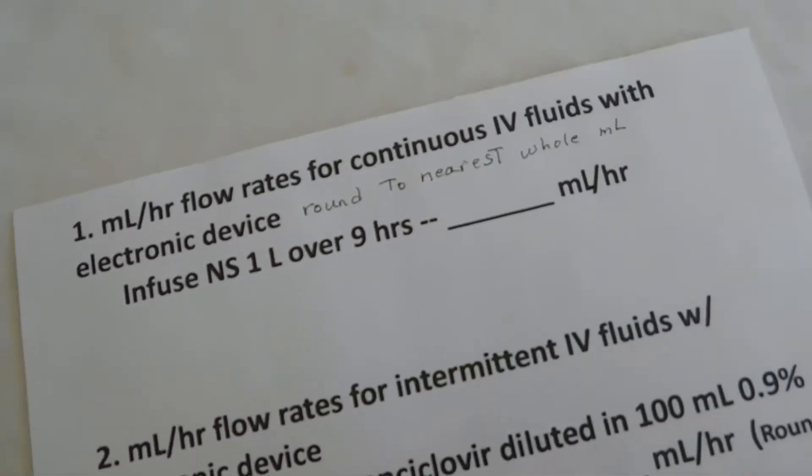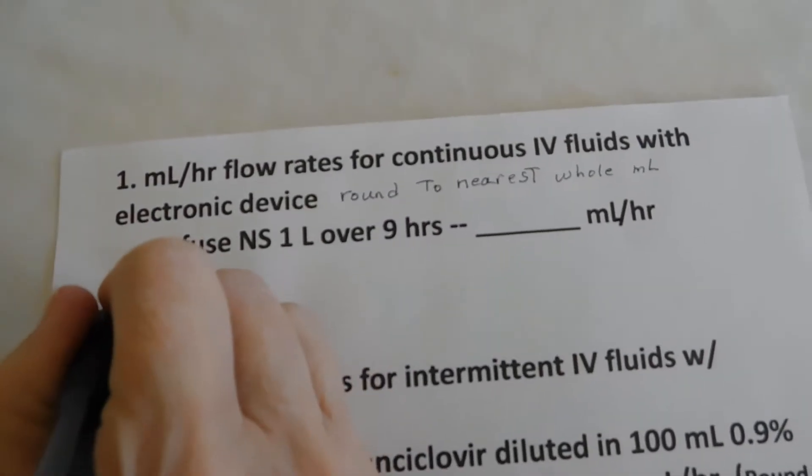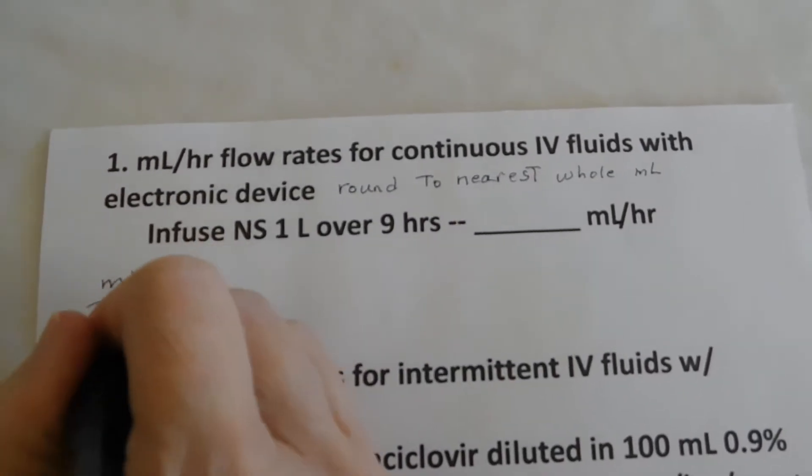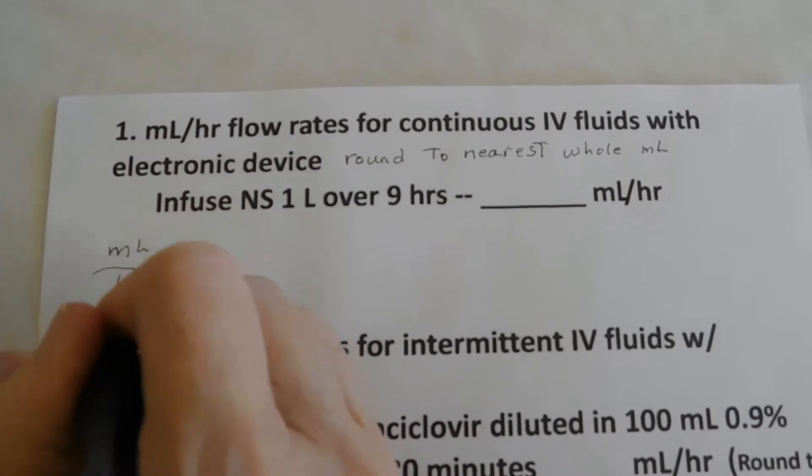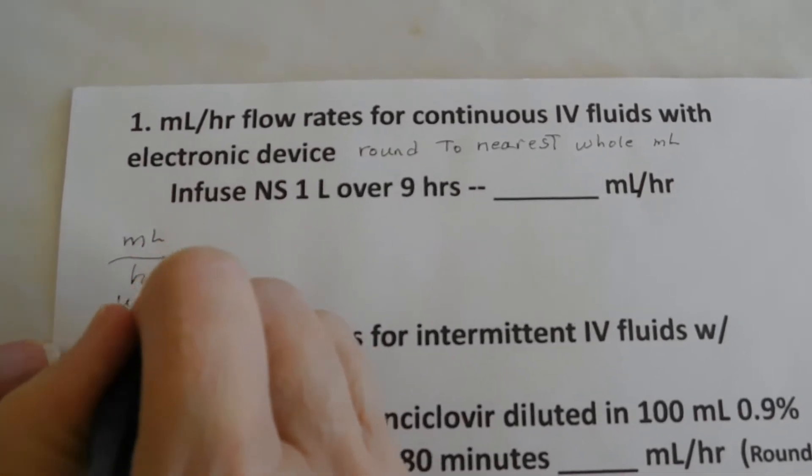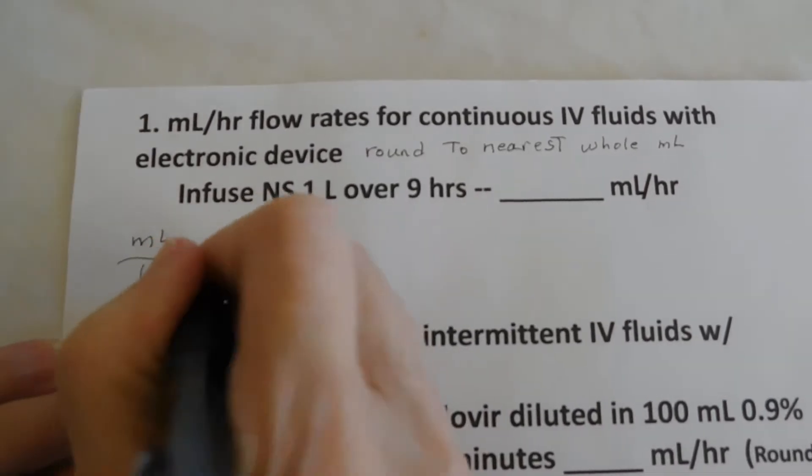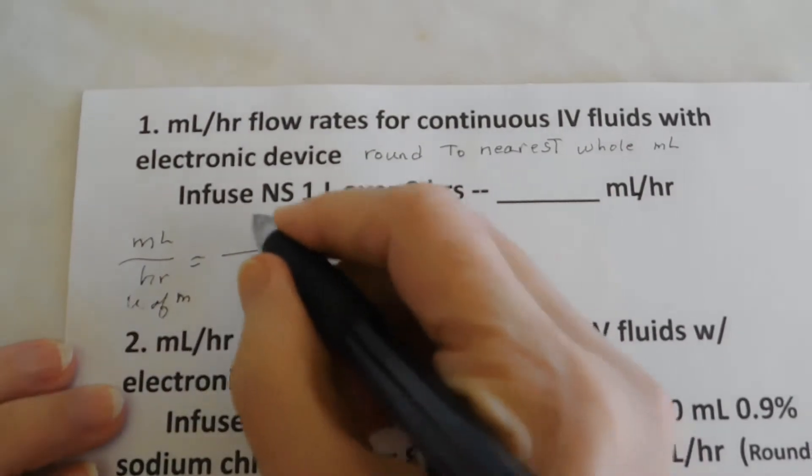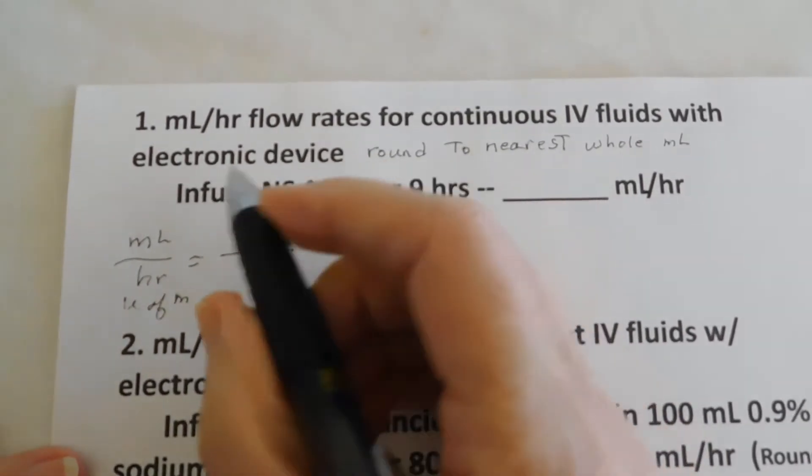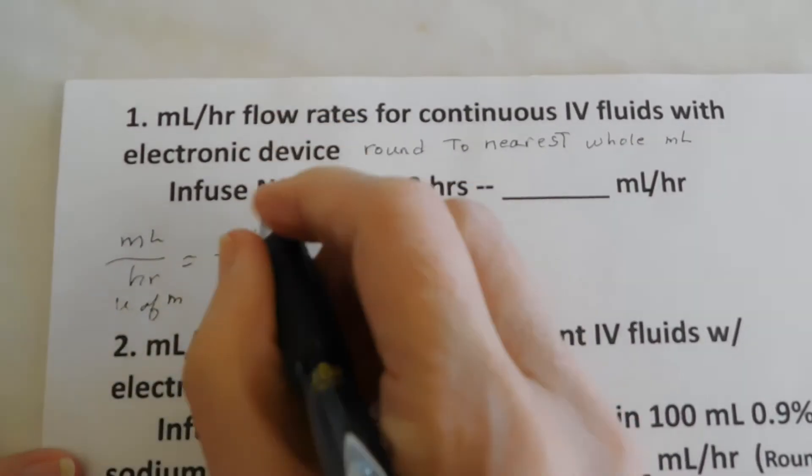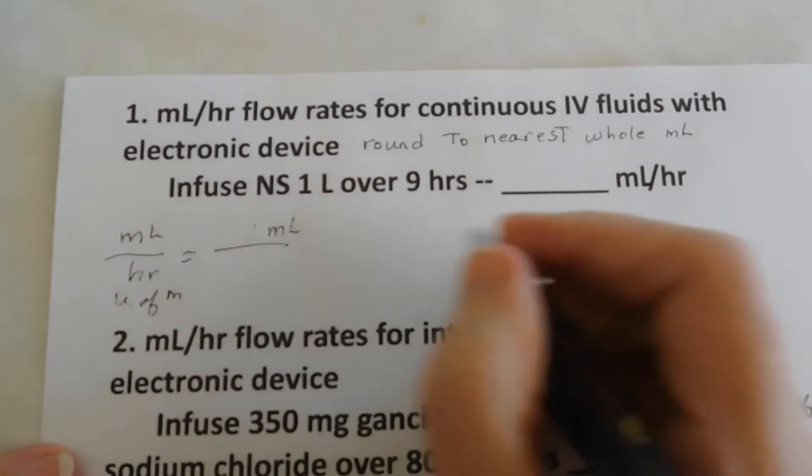So we're going to put milliliters per hour, which is our units of measure, equals. And we know that this first fraction needs milliliters in the numerator. Just automatically put milliliters.